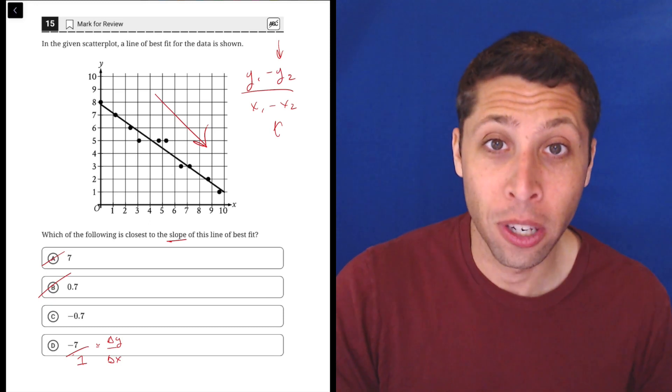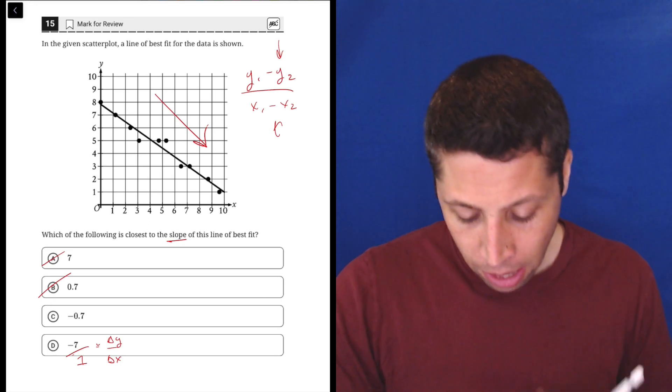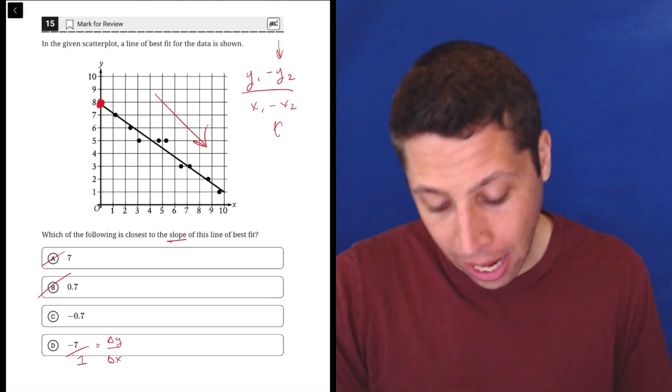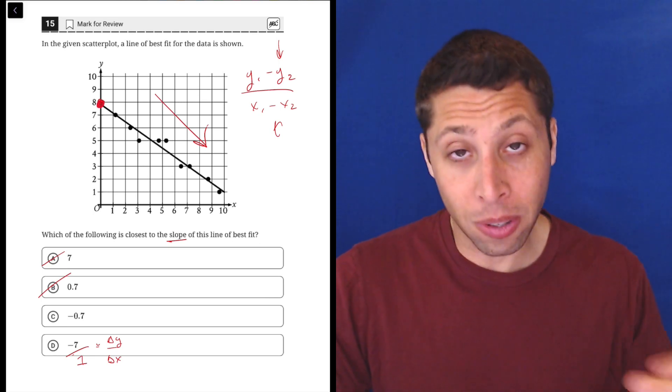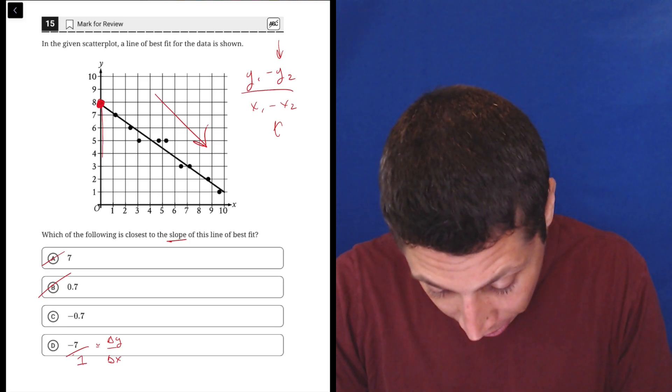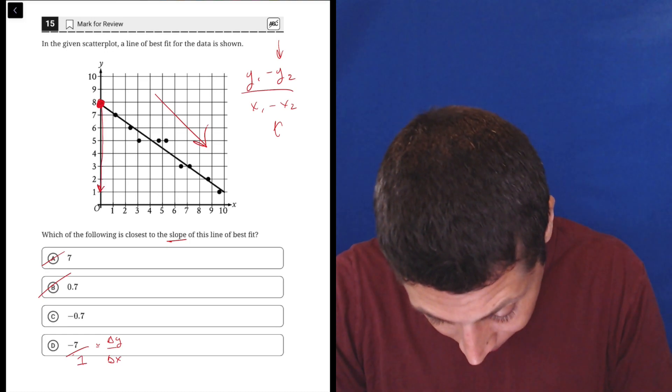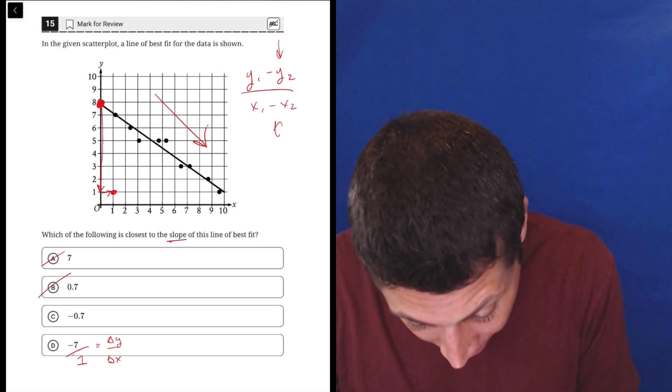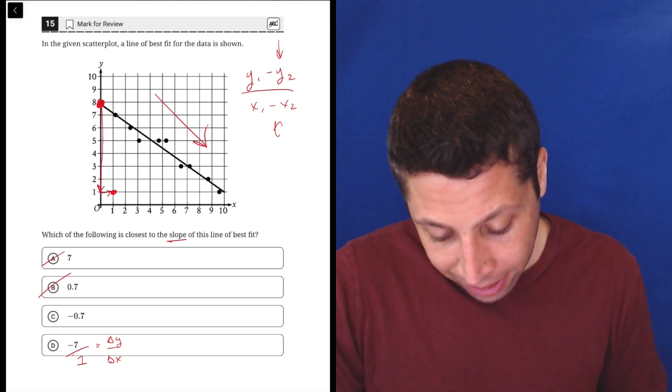Sometimes a triangle is used to represent the idea of change. Let's just test that out. Let's start at our y-intercept which is up here at 8. The change in Y is negative, so it's down 7. We go down 7, so that would get us to 1, and then it's over 1 to the right, which would put us right here.